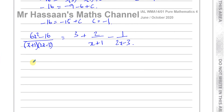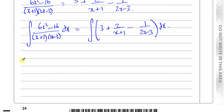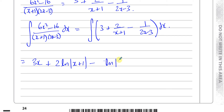The integral of 6x² − 16 over (x+1)(2x−3) dx is the same as the integral of 3 + 2/(x+1) − 1/(2x−3) dx. Integrating this gives 3x + 2 ln|x+1| minus 1 times ln|2x−3| divided by 2 — because we divide by the differential of (2x−3), which is 2 — plus C. So that's 3x + 2 ln|x+1| − (1/2) ln|2x−3| + C.